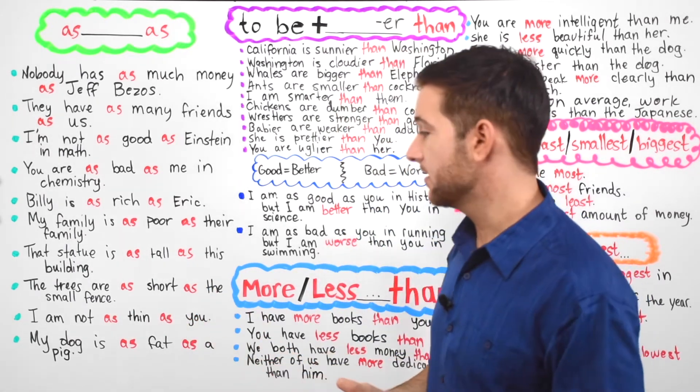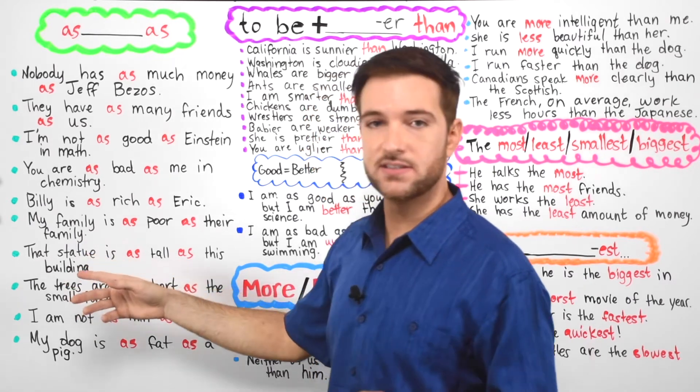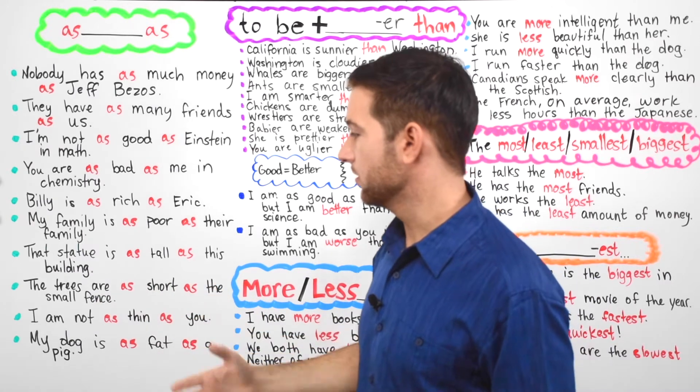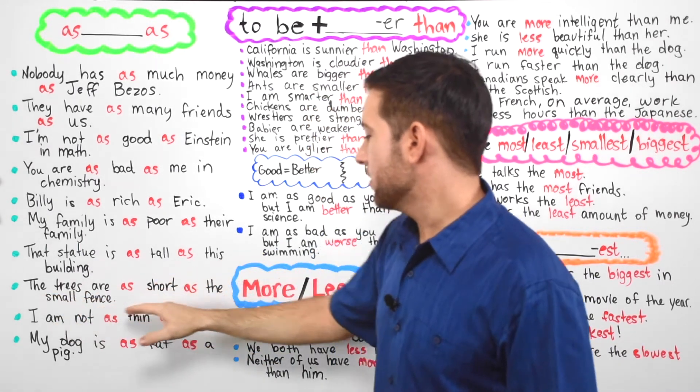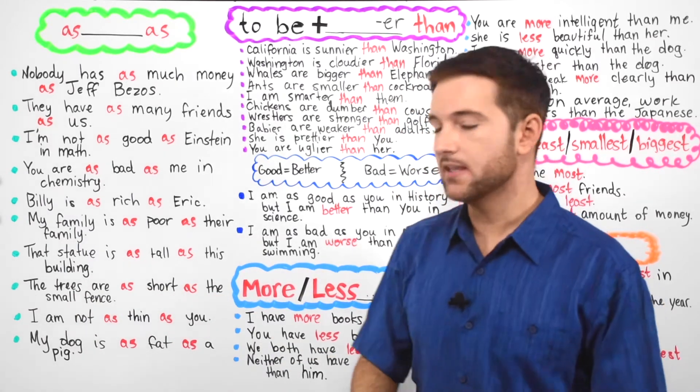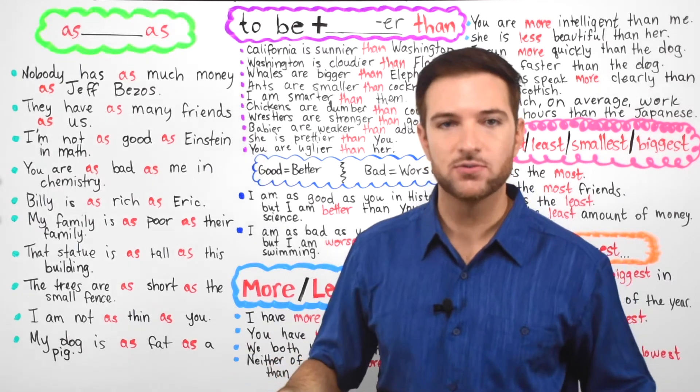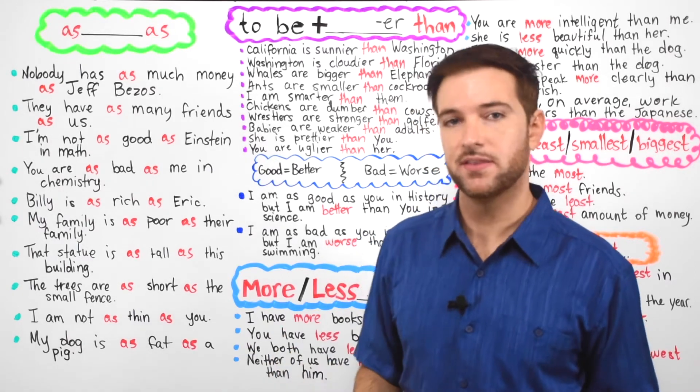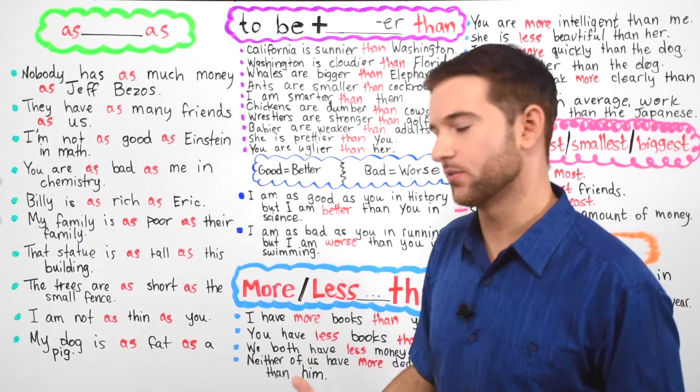China has a lot of big buildings. New York City has a lot of big buildings. A statue is like the Statue of Liberty. There's many statues in the world. The trees are as short as a small fence. A fence is like something that you use to keep animals out or you have a fence around your house. Only you can come in the fence. It's almost like a border, a border fence.